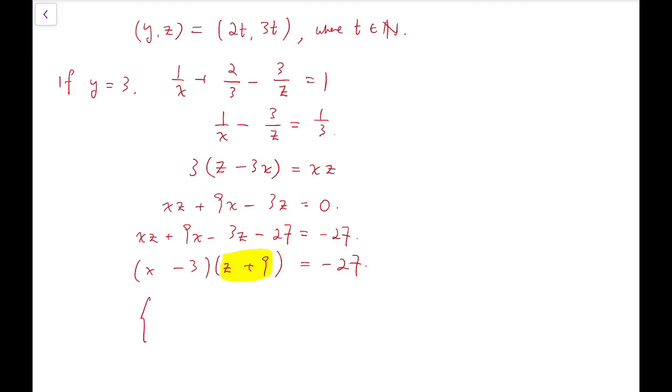z plus 9 is always positive because z itself is positive. So that means x minus 3 has to be negative. Now, if this has to be negative, then it can only be minus 1. Because the next negative factor is already minus 3, and that will give x equals 0 which is absurd.